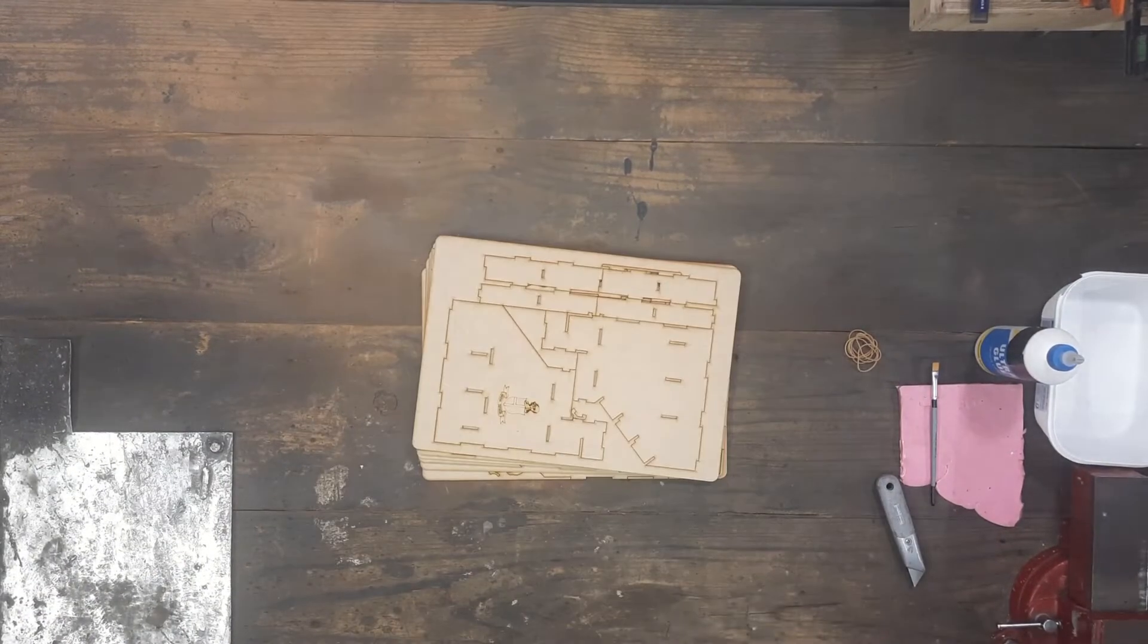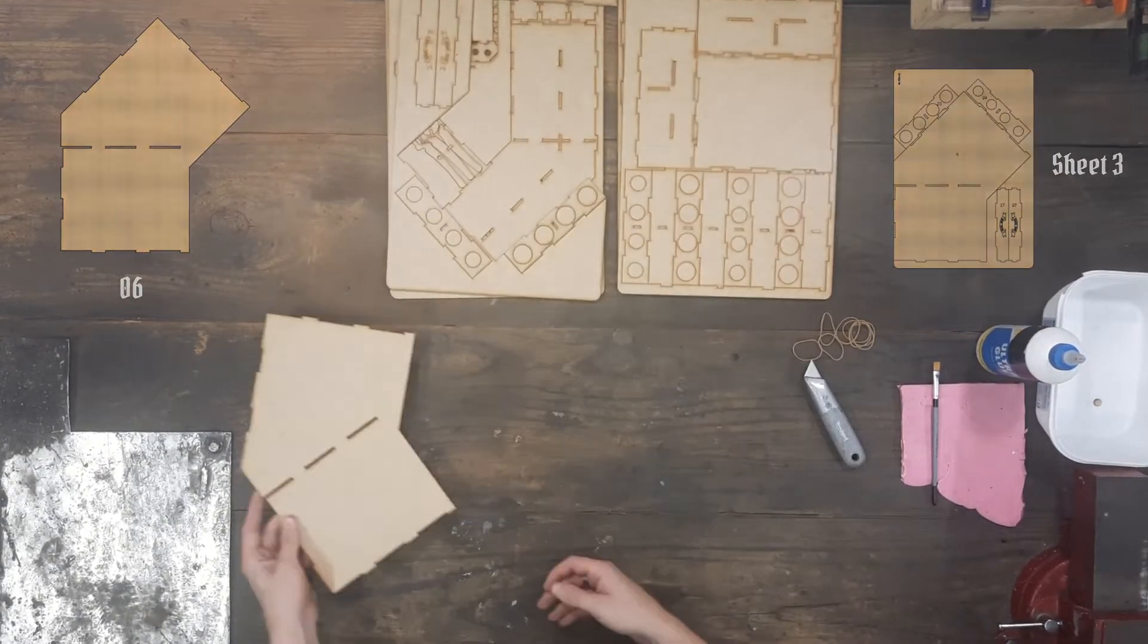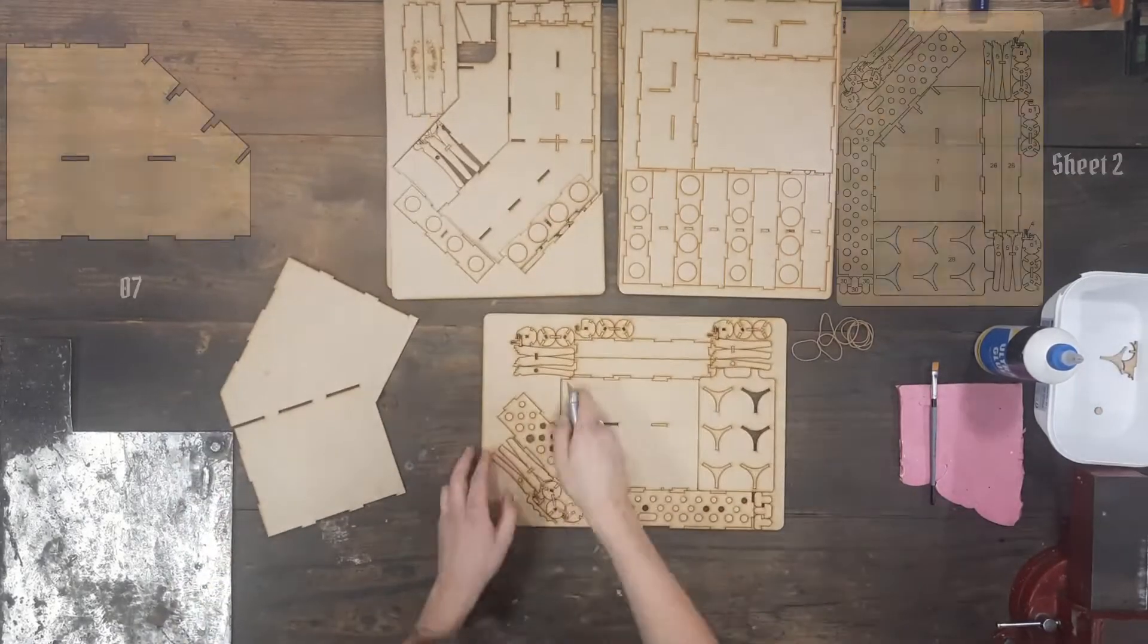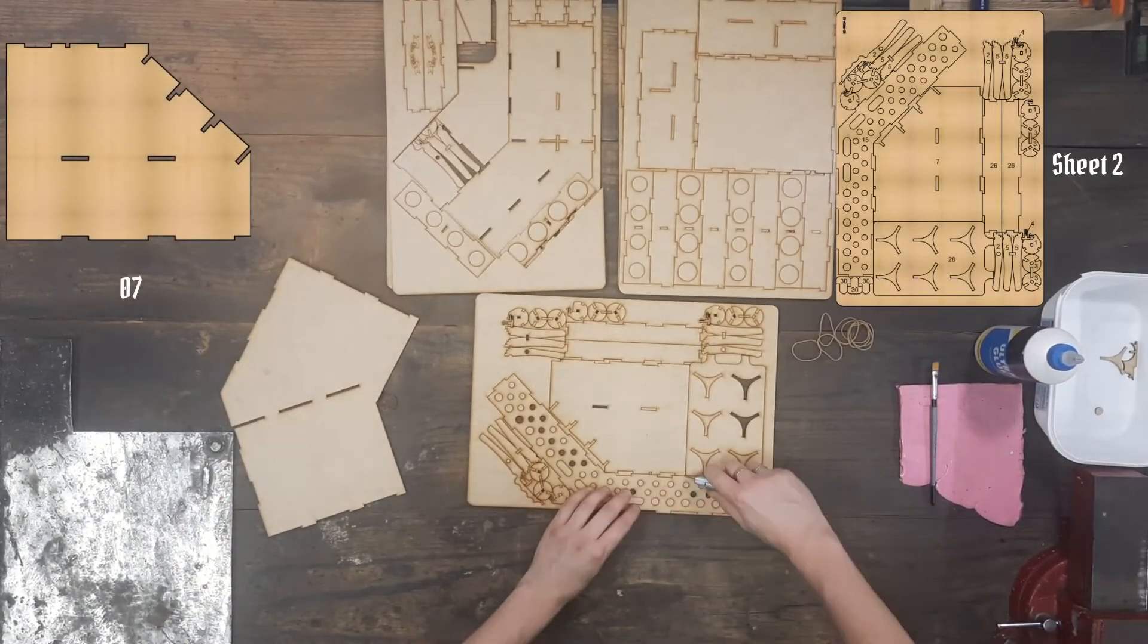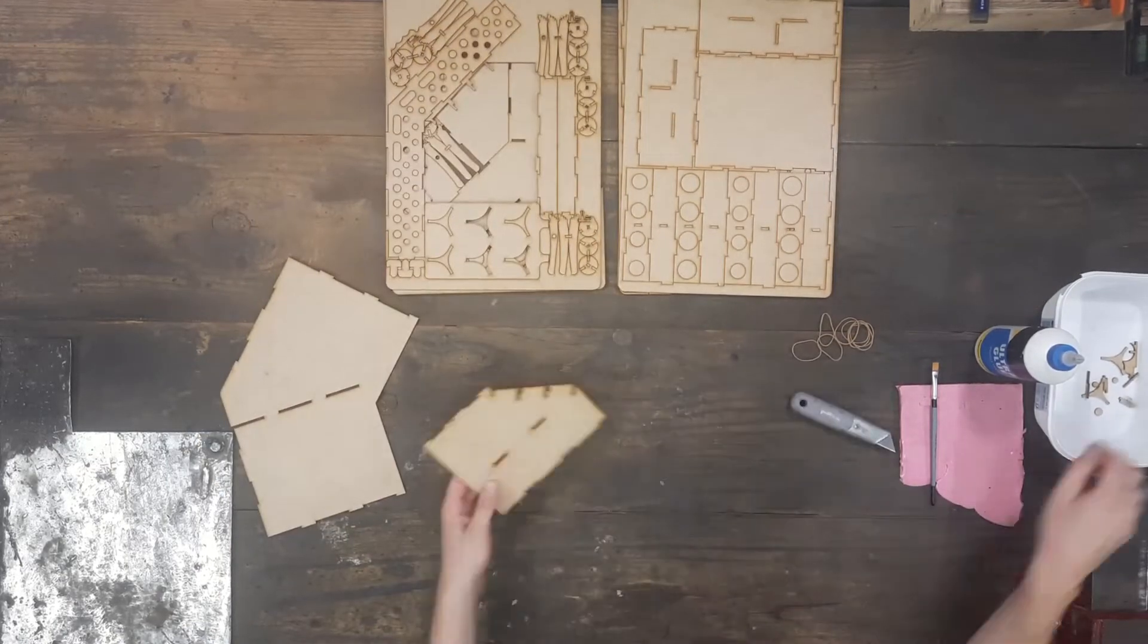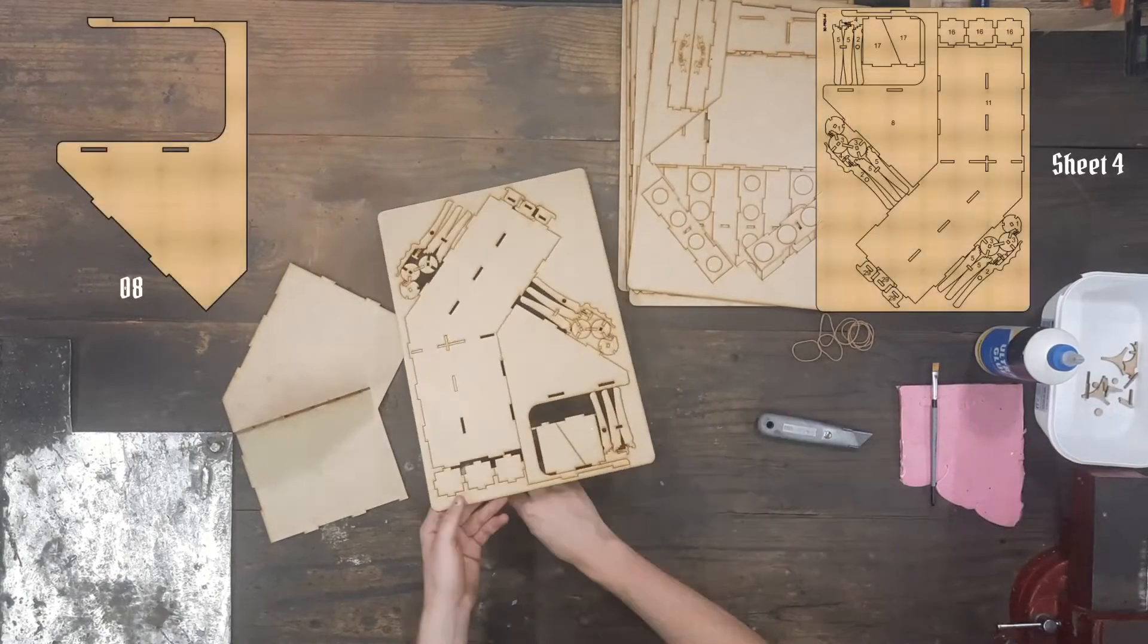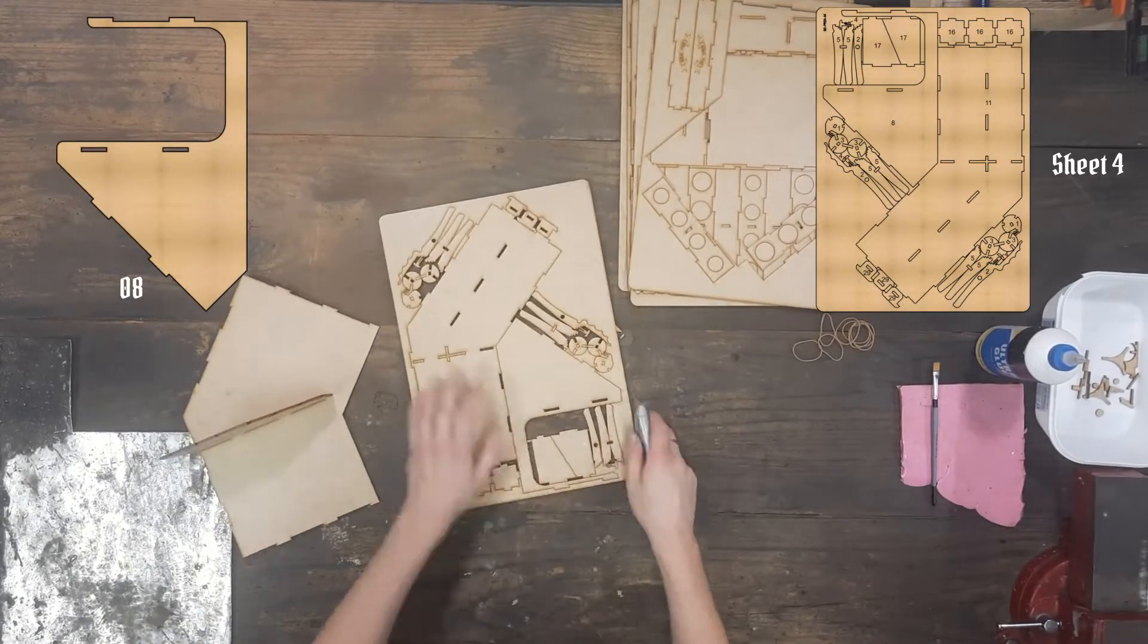This build starts off with part 6 as parts 1 to 5 are the painting handles shown in another video. For this build it is easier to cut out the parts as you need them rather than doing all of them at once. As this is a slightly more complex build, it does help to keep track of where the parts are on the different sheets.